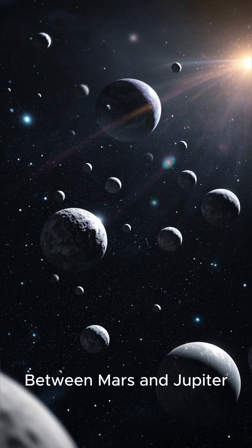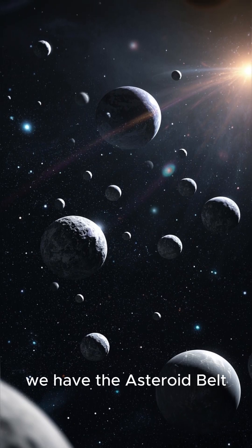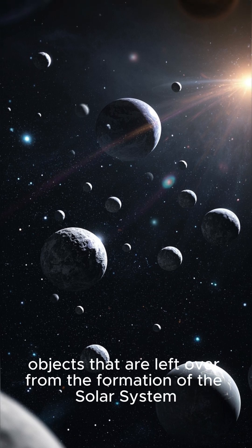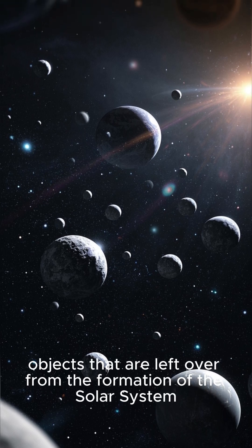Between Mars and Jupiter, we have the asteroid belt, a region filled with millions of rocky objects that are left over from the formation of the solar system.